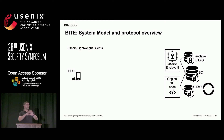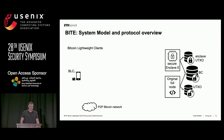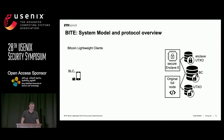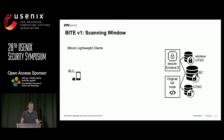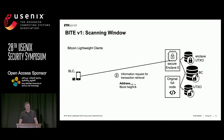The Bitcoin node participates in the peer-to-peer network and updates the blockchain and UTXO as usual. When a client wants to connect and request transactions, it first connects to the Bitcoin peer-to-peer network and acquires the latest block header — which serves to confirm later that the response was made on the longest chain. It then performs attestation, establishes a TLS connection with the enclave, and the process starts. The scanning window is the first variant: it is an extension of the current SPV mode but without reliance on bloom filters.